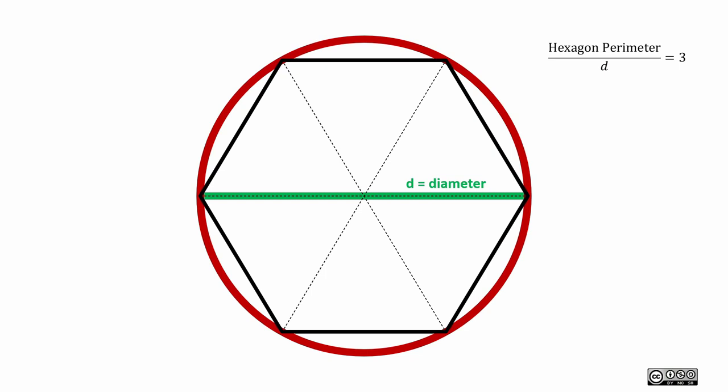If I figure out the perimeter of the hexagon compared to the diameter, I'll see that the ratio is three. So in terms of thinking about pi, I've already got an okay approximation, right? We know the value is a little bit higher for pi, but it's in the right neighborhood.